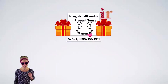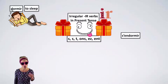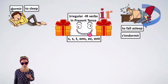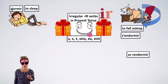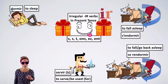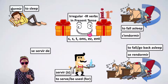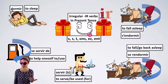More irregular IR verbs in this group: Dormir — to sleep. S'endormir — to fall asleep. Se rendormir — to fall back asleep, to go back to sleep. Servir à — to serve, of course, but also used a lot in French to say 'to be used for,' 'to serve as.' Se servir de — to help oneself to, and also to use.